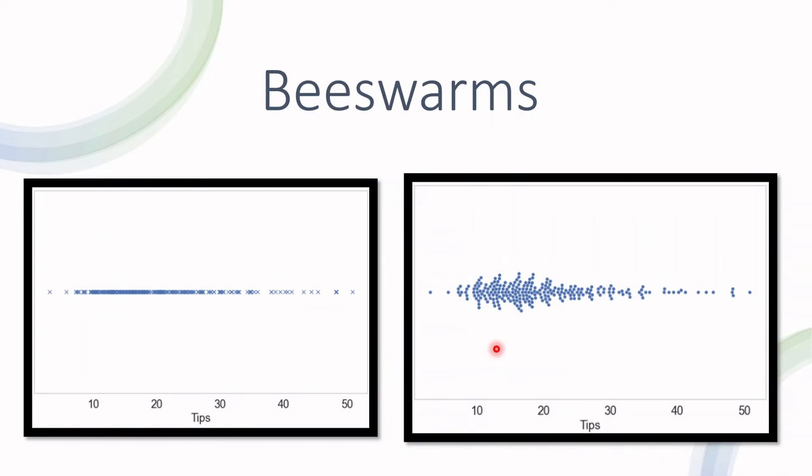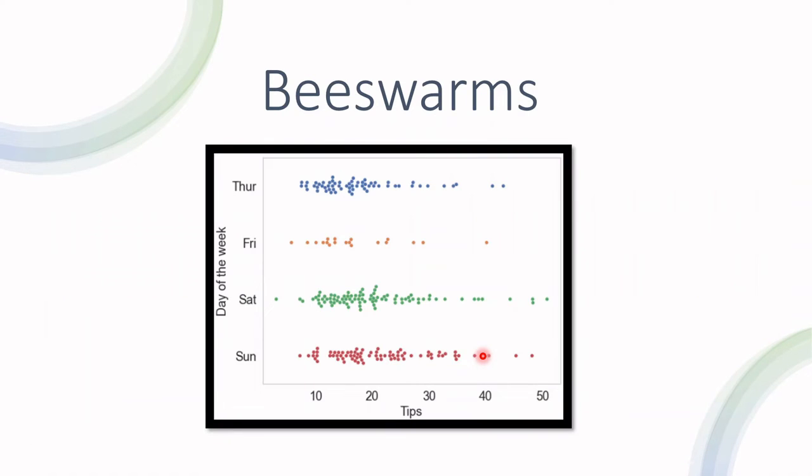You can even play with it a little more. Let's say we want to plot the tips and see various tips in corresponding days of the week. It would look something like this: Thursday, Friday, Saturday, and Sunday, the corresponding tips plotted as beeswarm plots.